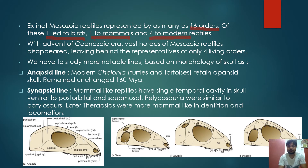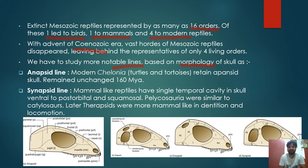With the advent of the Cenozoic era, vast numbers of Mesozoic reptiles disappeared, leaving representatives of only four living orders. We study the notable lines on the basis of morphology — particularly their fossilized hard structures — to identify and understand ancient reptiles.